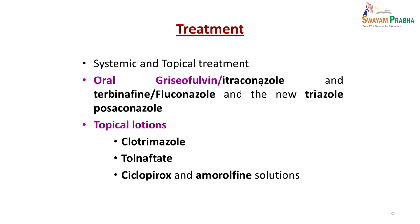Treatment comprises systemic or topical antifungals. Oral griseofulvin or itraconazole is given, or newer agents like terbinafine, fluconazole, or posaconazole. Topical lotions such as clotrimazole or tolnaftate are used for milder disease. Many times the two are combined depending on severity, and treatment can extend from 6 to 8 months depending on how extensive the lesion is.